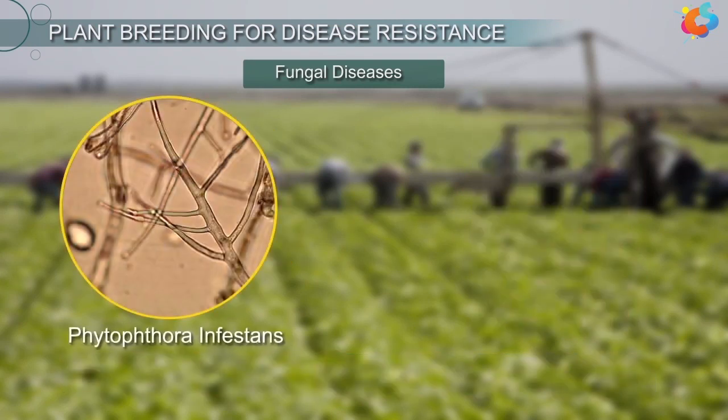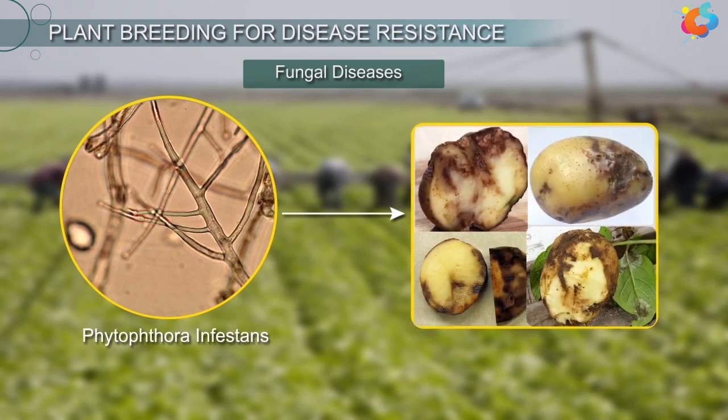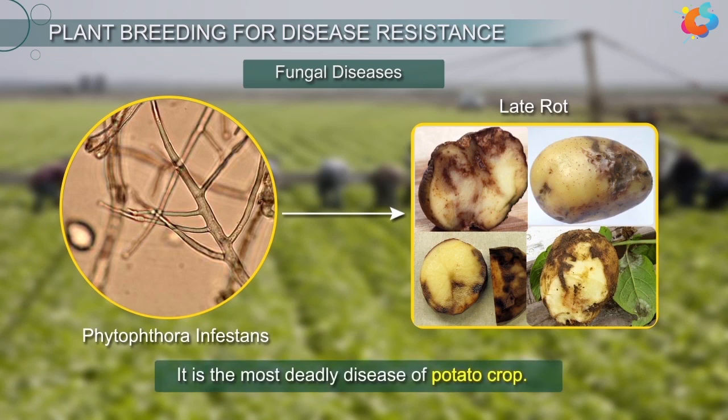Another fungus called Phytophthora infestans causes a disease in potato called late blight. It is the most deadly disease of the potato crop.